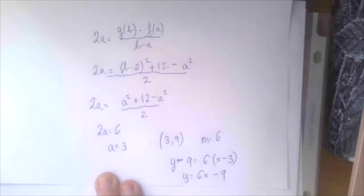So if we distribute and add 9, we get y equals 6x minus 18 plus 9 is minus 9. And so there is the equation.